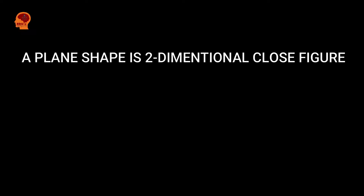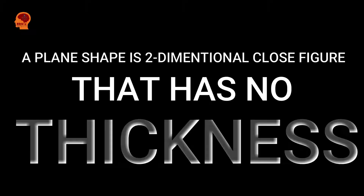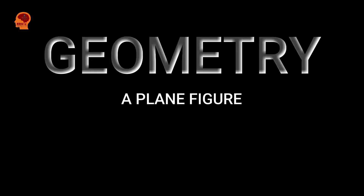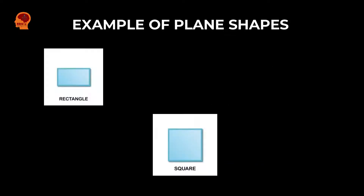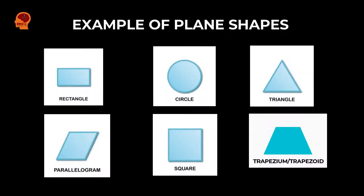A plane shape is a two-dimensional closed figure that has no thickness. In geometry, a plane figure has no thickness at all — it lies entirely in one plane. Below are examples of different types of plane figures.